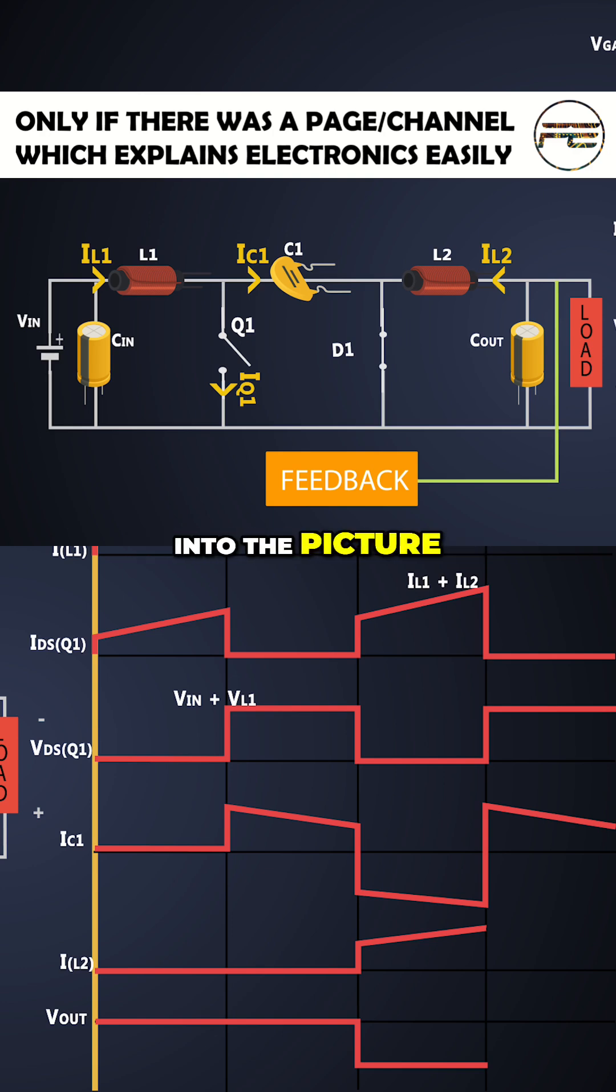But inductor L2 comes into the picture. It induces the flyback voltage. So the power to the load is provided by the inductor L2 and output capacitor.